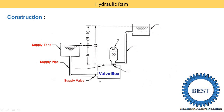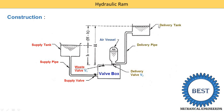Then it is passed into the supply valve. Then after that is the valve box. In the valve box, there are two valves — one valve is the waste valve V1, and another is the delivery valve V2. Then after that is the air vessel, then the delivery pipe, and finally the delivery tank. These are the different components of a hydraulic ram.